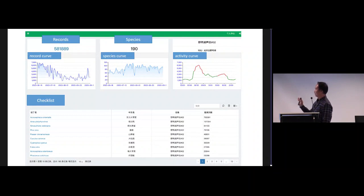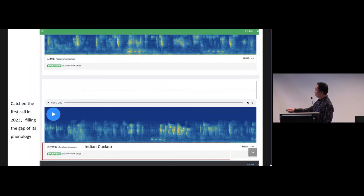This page shows the result of one of the sound detectors. You can see how many records we had, belonging to 190 species we have detected. We can also see the record curve, species curve, and the activity curve, and the richness of the detected species. Fortunately, in the first quarter of this year, we had the first record of Indian Cuckoo in Beijing. This fills the gaps in the phenology of this species.